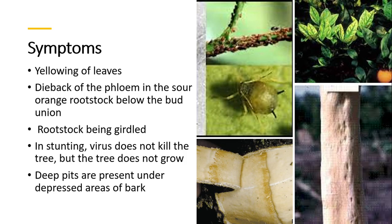Regarding symptoms, as you can see here on the right side: yellowing of leaves, die-back of the phloem in the scion or in the rootstock below the bud union. The rootstock becomes girdled and stunting occurs. The virus does not kill the tree outright, but the tree does not grow well. Stunted growth is due to the attack of this disease, and deep pits are present under depressed areas of the bark.